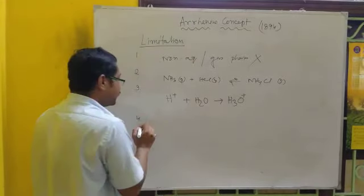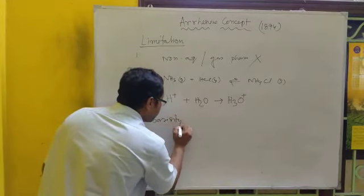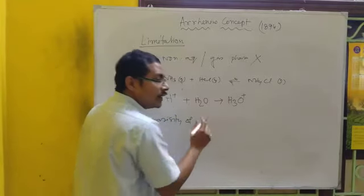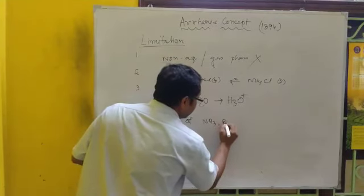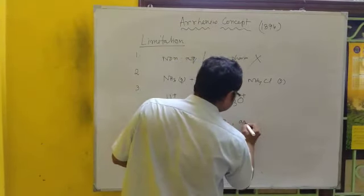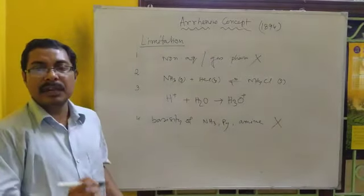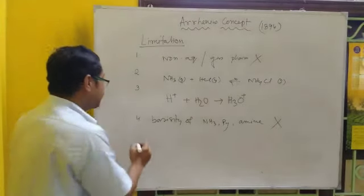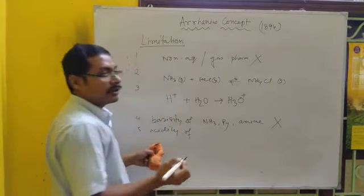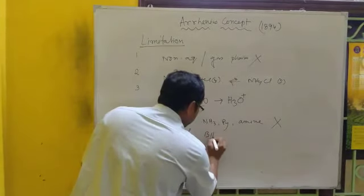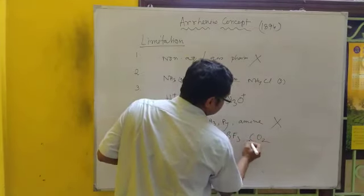Fourth point is that the basicity of electron-rich species like NH3, pyridine, or amines cannot be explained. Similarly, it cannot explain the acidity of electron-deficient molecules like BH3, BF3, or carbon dioxide.